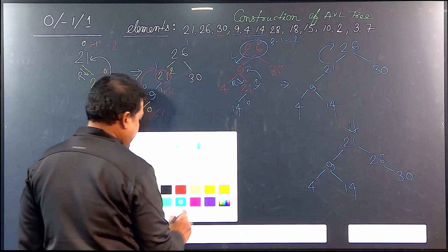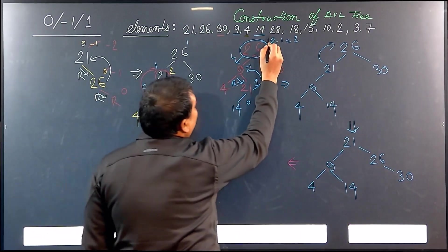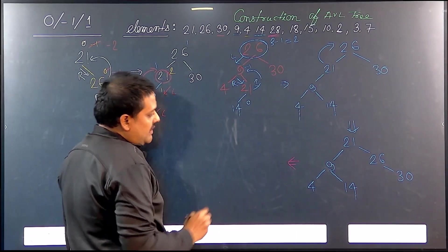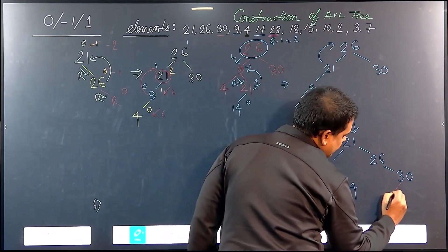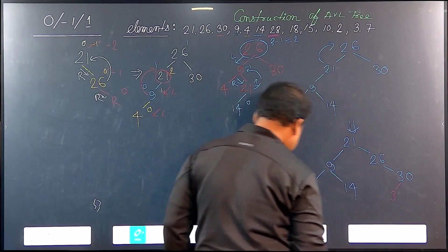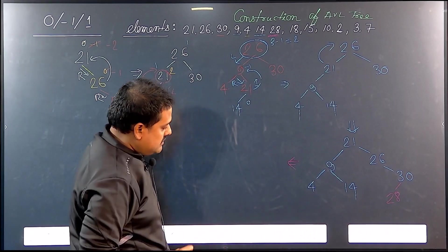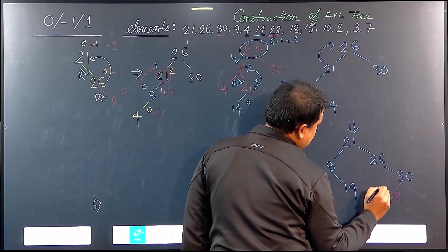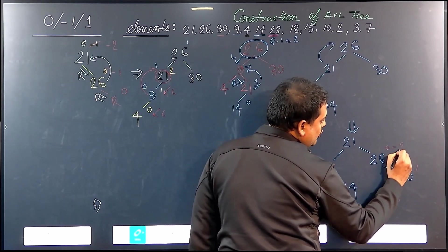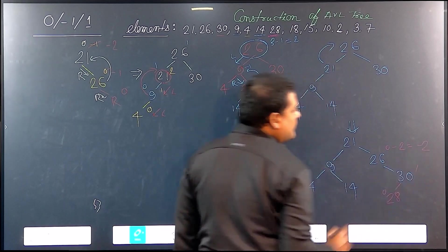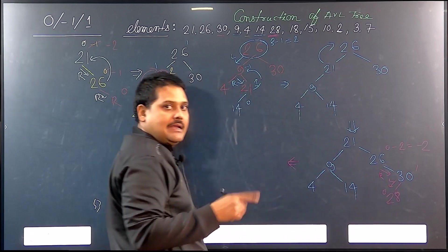What element are we going to insert next? We are going to insert 28. So if 28 is inserted — it is less than 30 — 28 goes to the left of 30. We check the balancing: this is 0, this is 1, and for 26 it is 0 minus 2, which is minus 2. So there is a right-left imbalance.